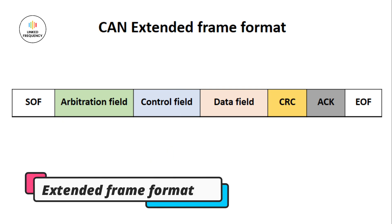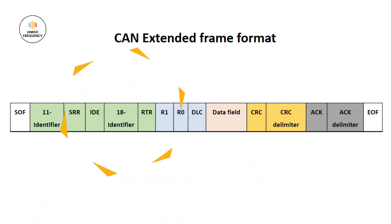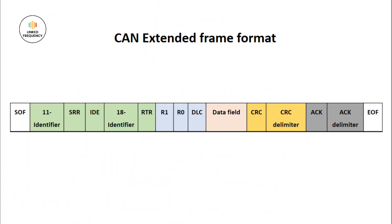Moving ahead, let's look into the Extended Frame Format. The extended frame format similarly contains Start of Frame, Arbitration field, Control field, Data field, CRC, Acknowledgement, and End of Frame — quite similar to the standard frame format. However, there is a slight difference in the Arbitration field and Control field, as shown in the upcoming image.